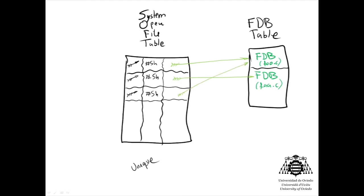With this, each entry of the system open file table can point to the file descriptor block table instead of storing the file descriptor block itself.